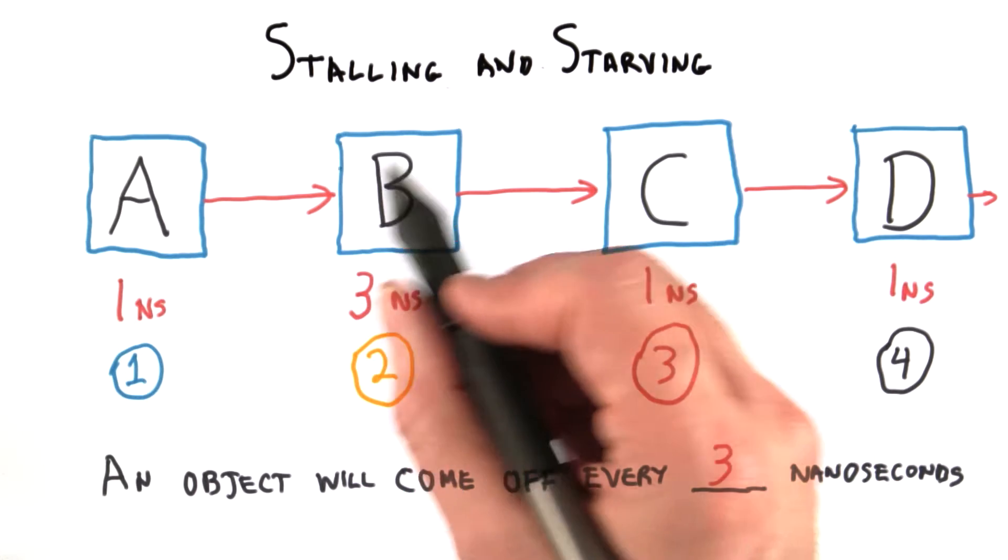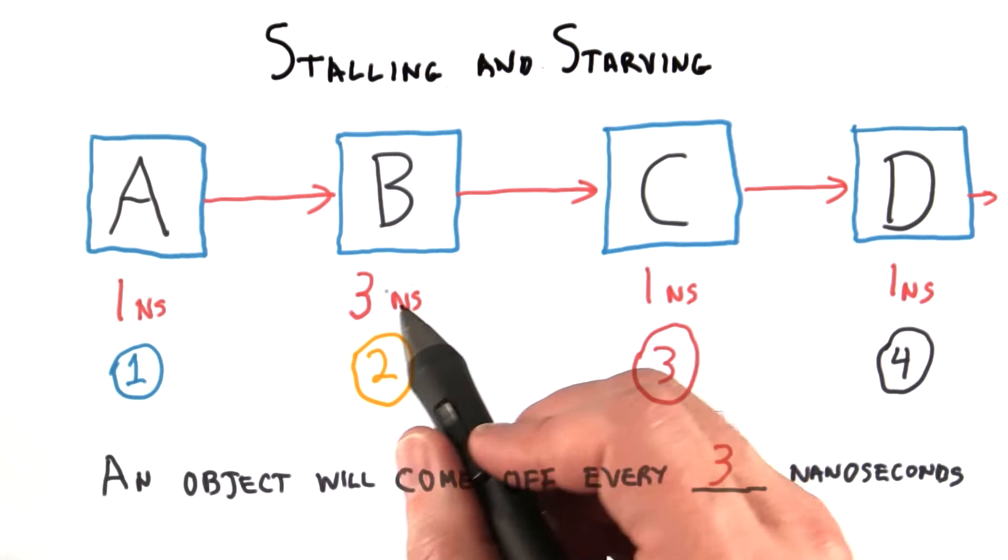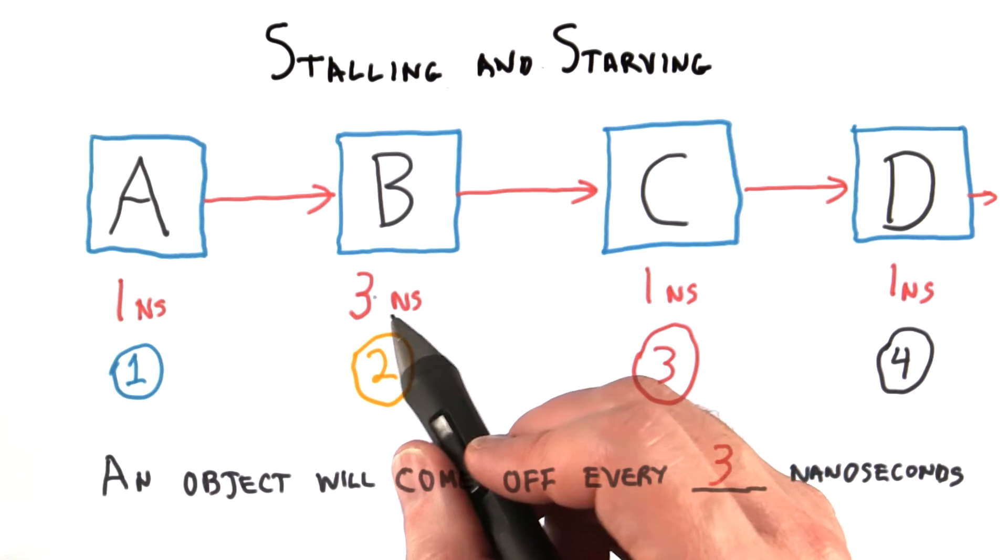There's always a bottleneck in the pipeline. There's always some slowest stage. There may be two or three that are tied for slowest, but there's always some stage that's the slowest.